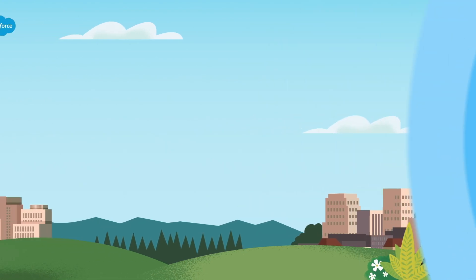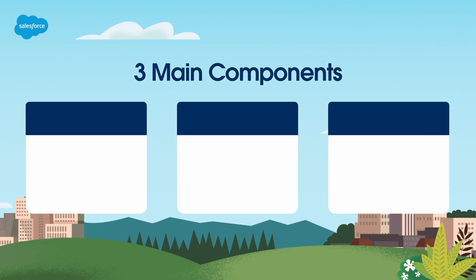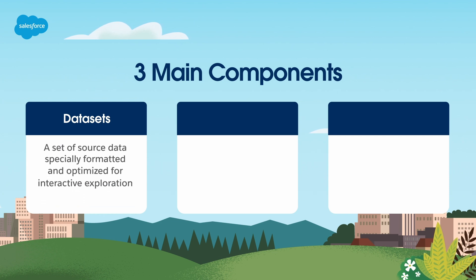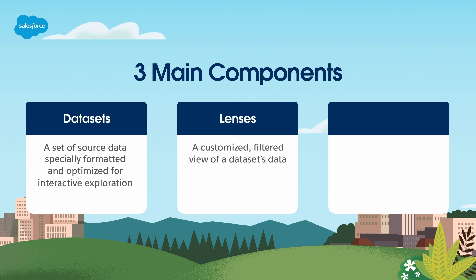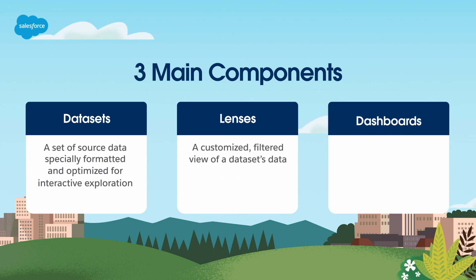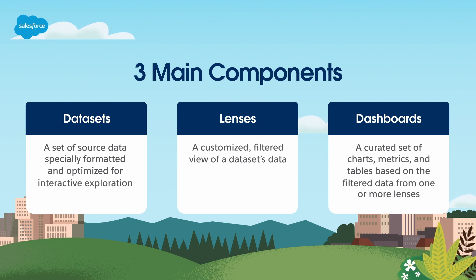When reporting with B2BMA, there are three main components you'll be working with. Datasets — a set of source data specially formatted and optimized for interactive exploration. Lenses — a customized filtered view of a dataset's data. Dashboards — a curated set of charts, metrics, and tables based on the filtered data from one or more lenses.